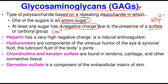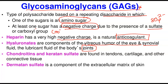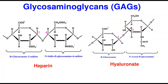Because they are charged, GAGs retain water and perform very important functions as part of connective tissue. Examples include: heparin, which has a high negative charge and is used as a natural anticoagulant particularly in hospitals; hyaluronic acid or hyaluronate, which is a component of the vitreous of the eye and synovial fluid — the lubricant fluid of the body's joints that allows bones to move smoothly; and chondroitin and keratan sulfate, found in tendons, cartilages, and other connective tissues; and dermatan sulfate, a component of the extracellular matrix of the skin.